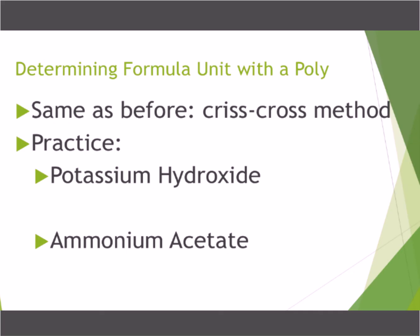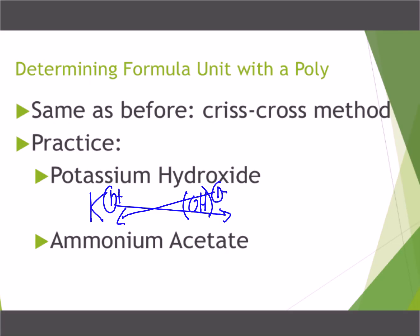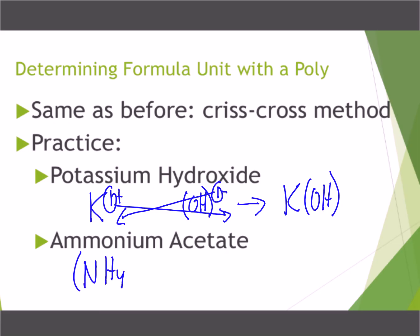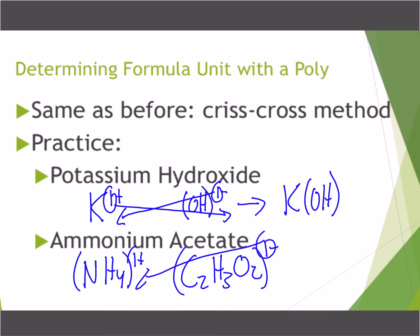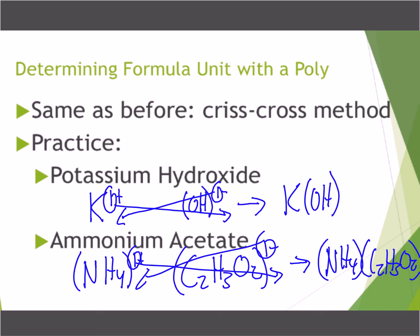Writing formulas with polyatomics uses the same crisscross method. Write your ions: K is 1+; hydroxide is OH− in parentheses with the charge on the outside. Crisscross the numbers only, ignoring the signs. Our formula for potassium hydroxide is KOH. For ammonium acetate: ammonium is NH4+ and acetate is C2H3O2 with a 1− charge. Crisscross gives NH4(C2H3O2).